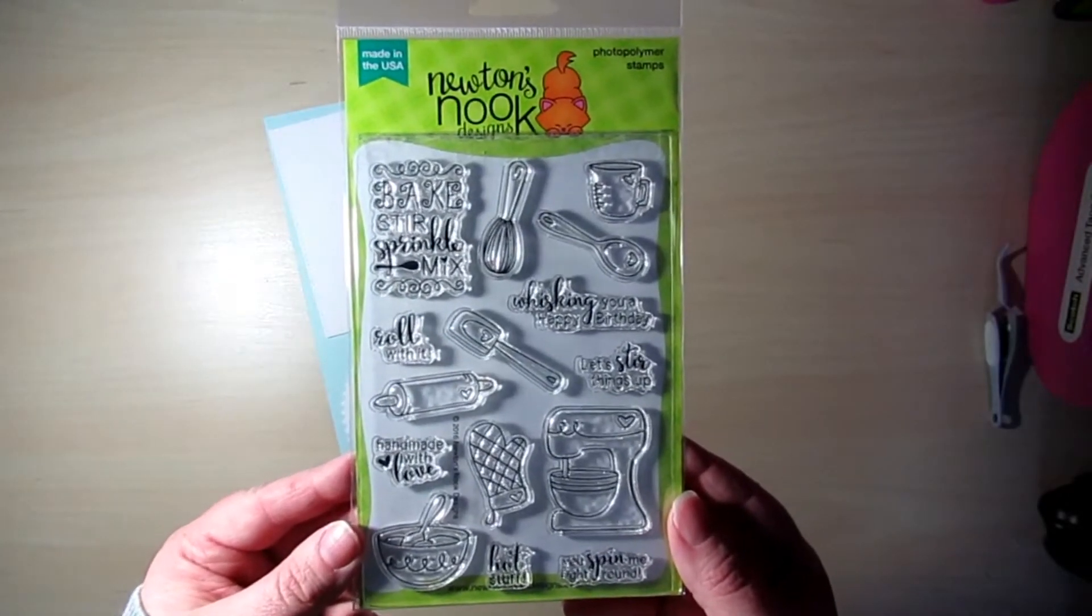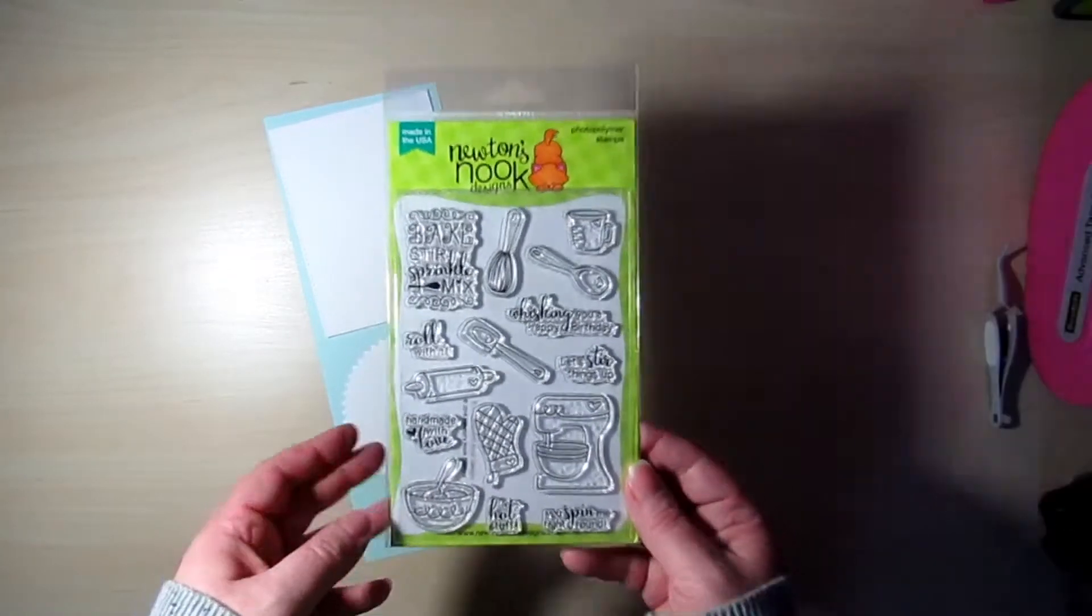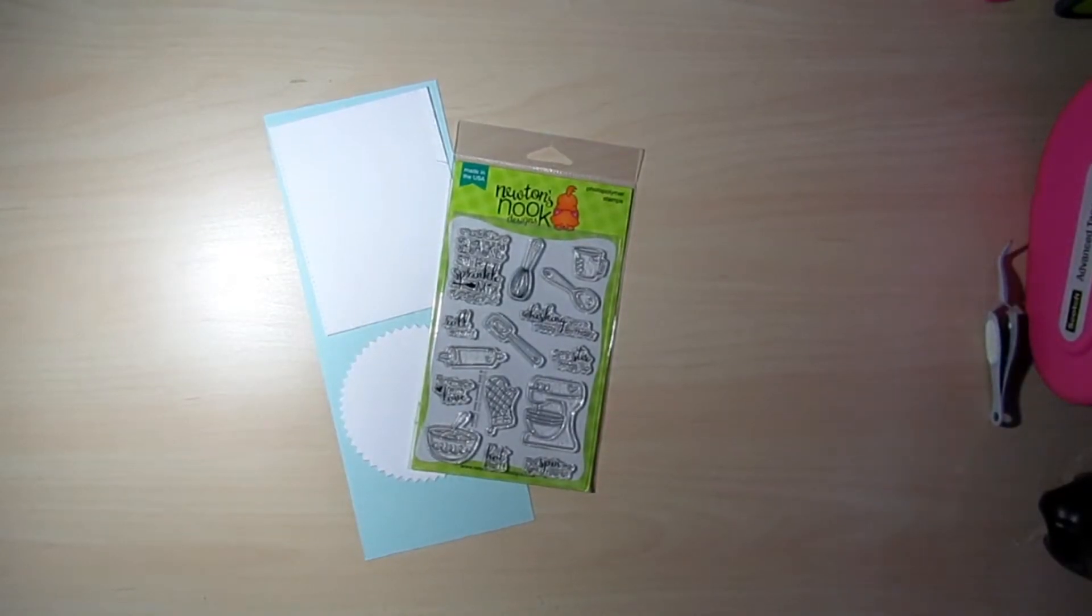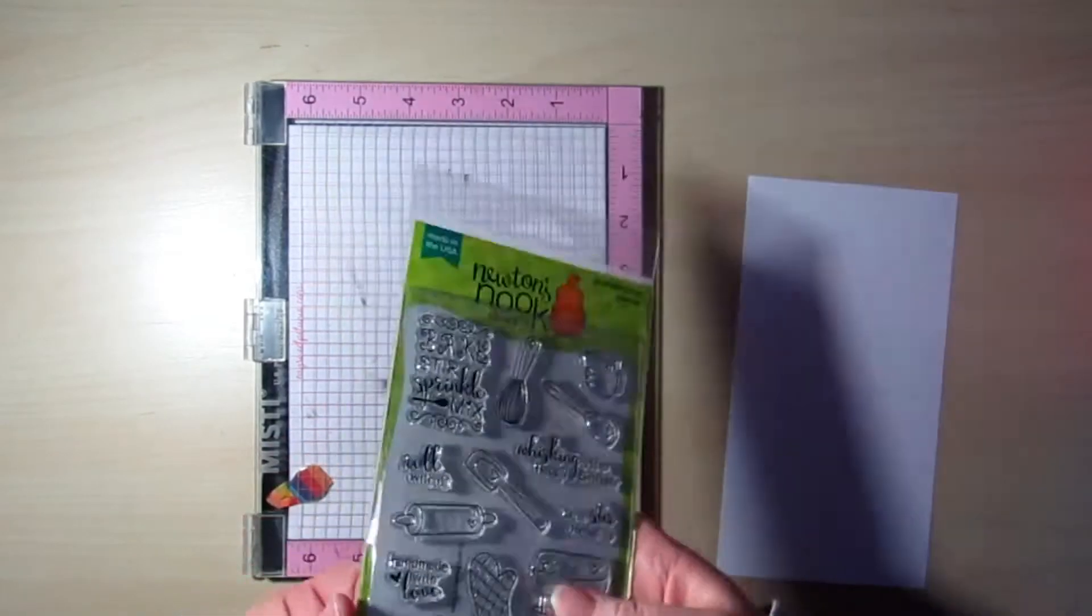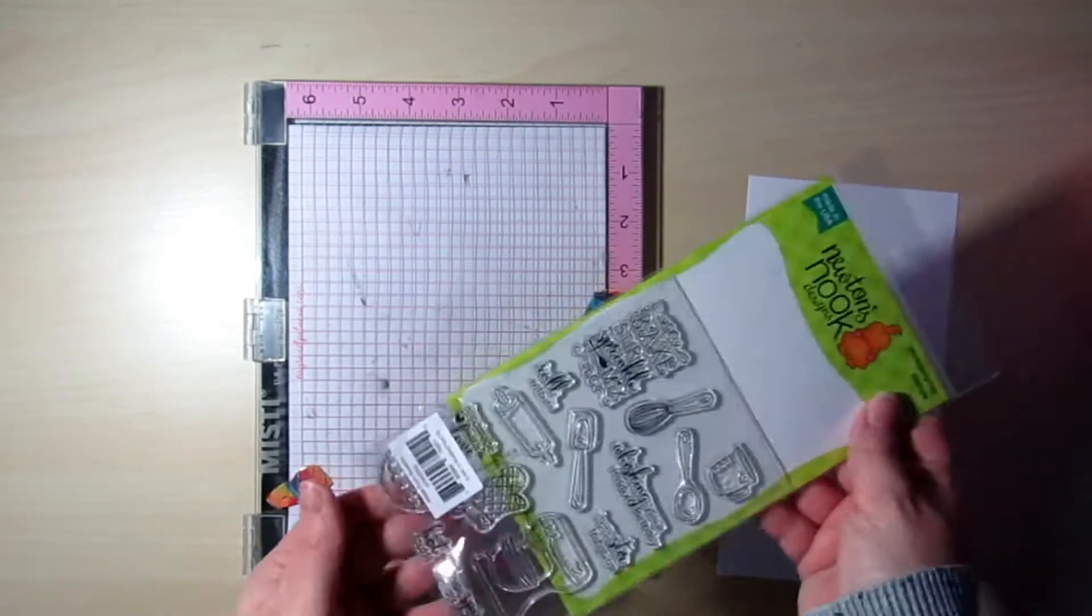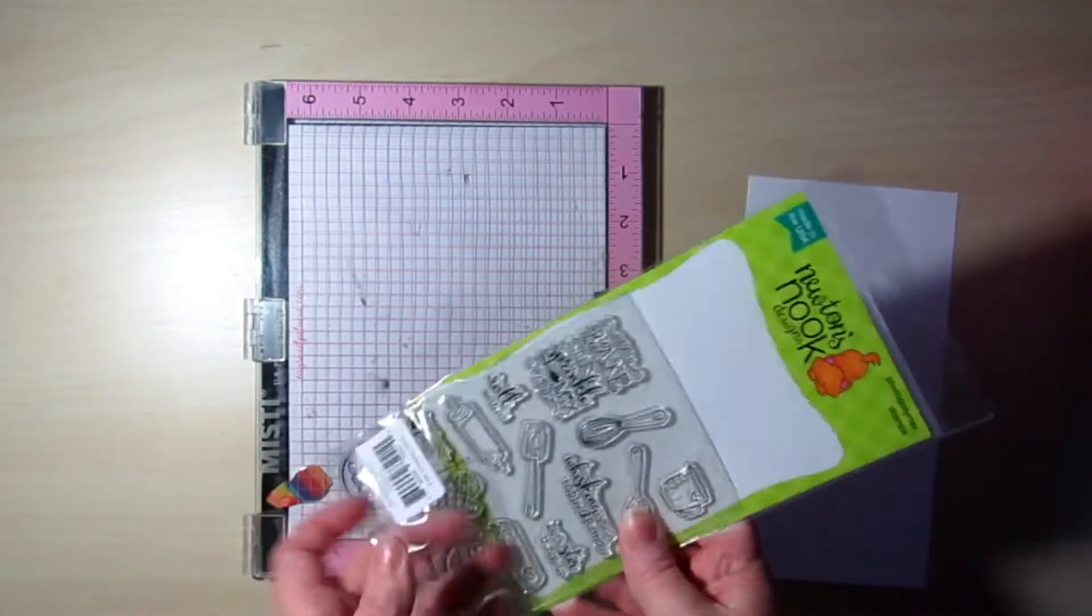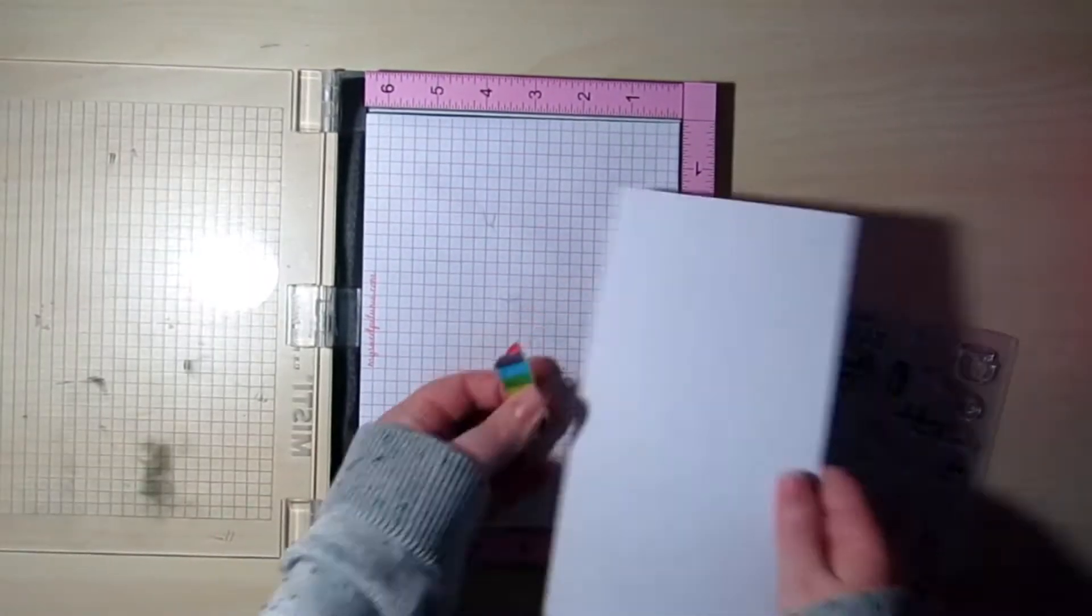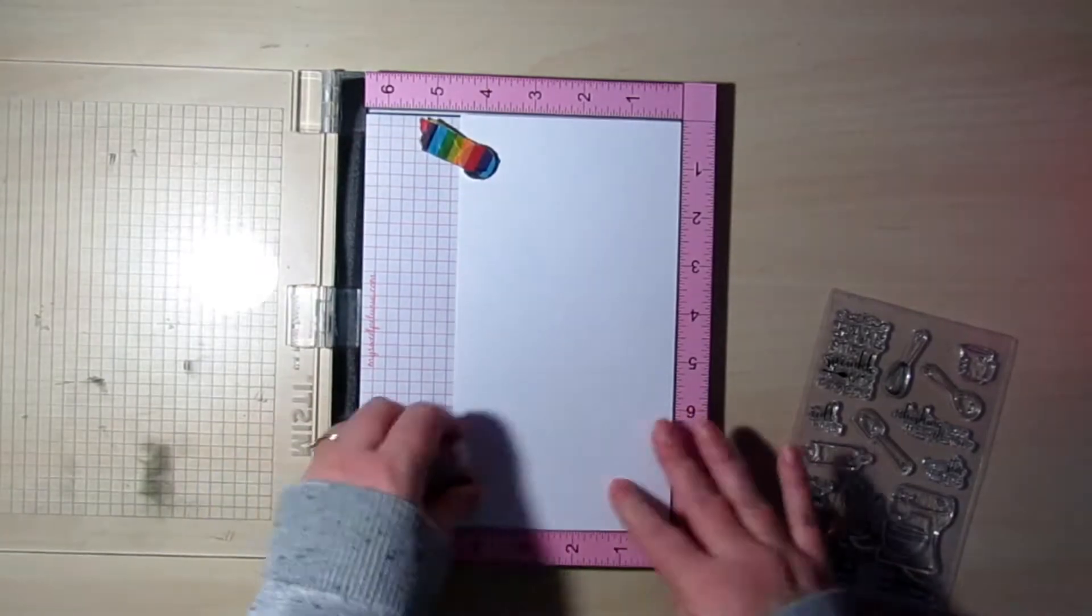I'm going to be making an interactive card today using the peekaboo wheel from MFT. So I've already cut all of my pieces that I need. Let's go ahead and stamp out the images. I am going to stamp all the images with Memento Tuxedo Black ink and we're going to color those with Copic markers.